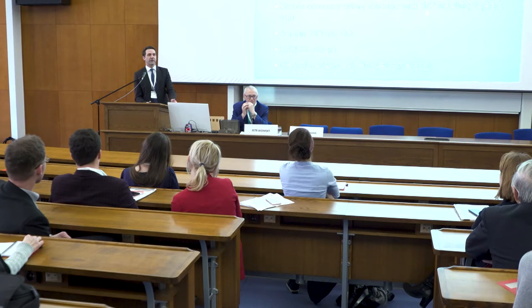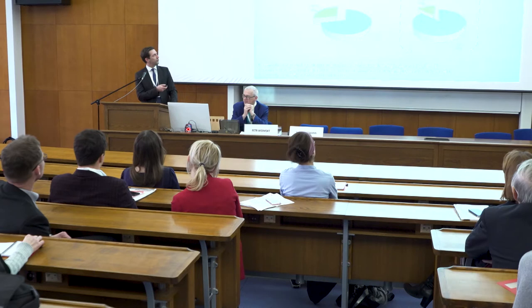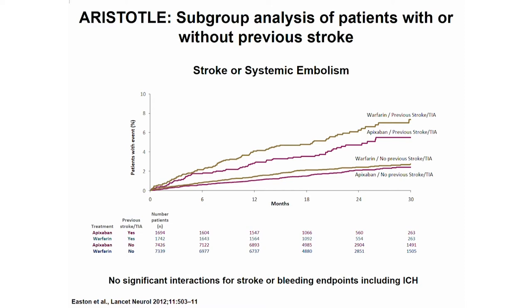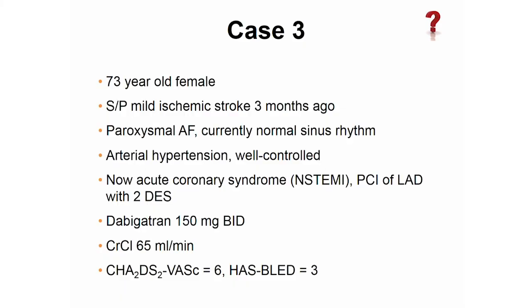Just to show that we have good data to recommend NOAC treatment in patients with previous stroke — these patients were well represented in phase three trials. For example, in the apixaban trial, there was no significant interaction between patients with or without previous stroke. Patients with previous stroke had a higher absolute risk reduction. So there is good evidence to recommend NOACs in patients with previous stroke.